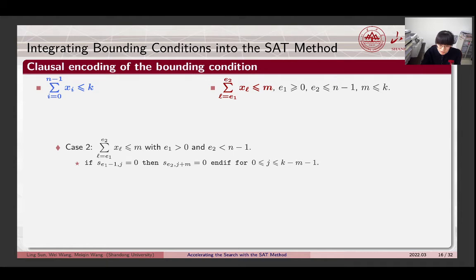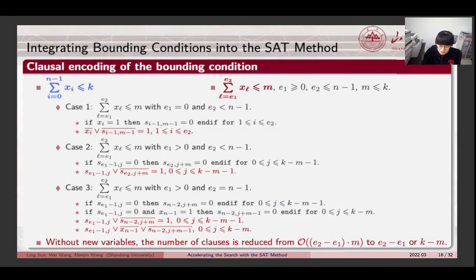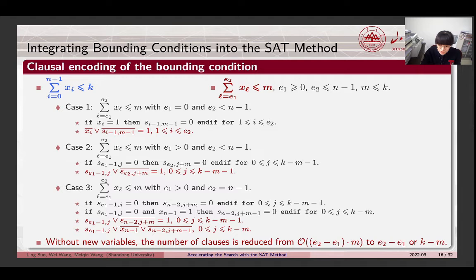Then, with the circuit of the original objective function, we can establish the constraint on the partial sum. Note that this constraint can be converted into Boolean equation in CNF, and we finish the clause encoding for the second case. The discussion for the two remaining cases are similar. The advantage of this encoding method is we do not claim new variables, and the number of clauses is reduced.